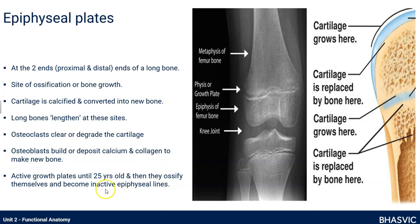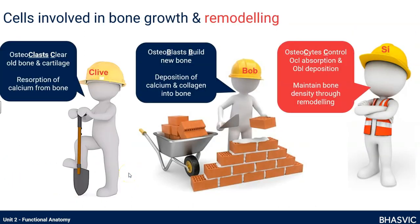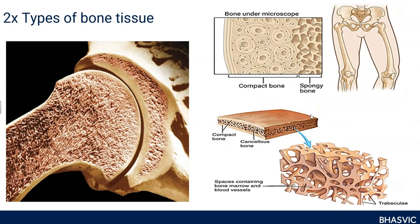Just to remind you: osteoclasts clear or resorb calcium, osteoblasts build or deposit calcium and collagen, and eventually osteoblasts become osteocytes. They control bone remodeling and bone density.